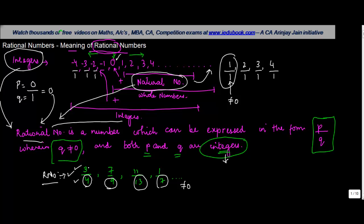And all these fractions in any case were rational numbers. So basically, a rational number is a fraction which can be written as P upon Q, where P and Q are integers and Q is not equal to 0.